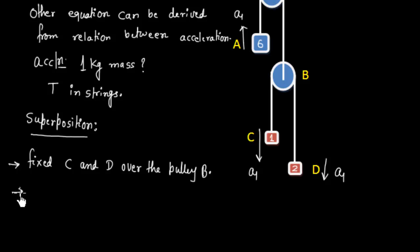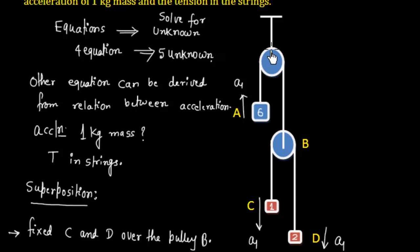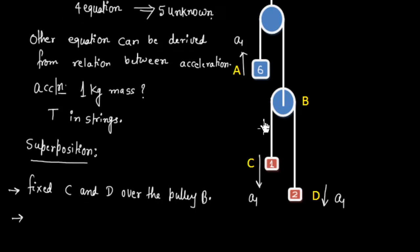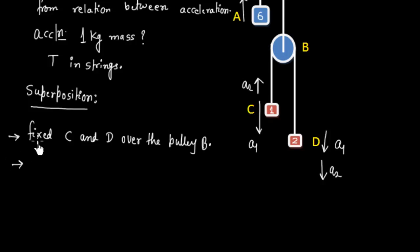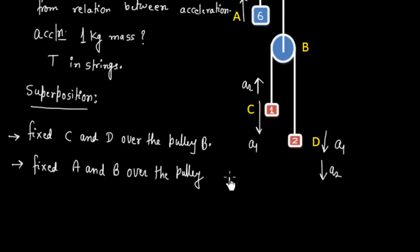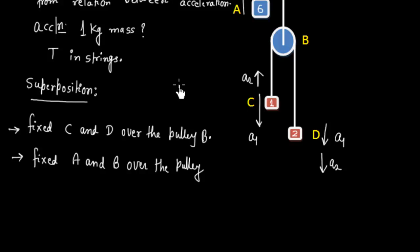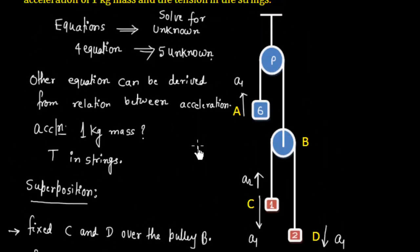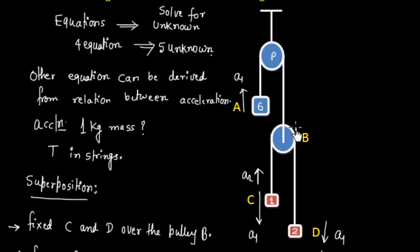In the first case we have fixed C and D over the pulley B. In the second case, let us fix A and B — now this rope is fixed and not moving. Only C and D are free to move. Let us say C is going up with acceleration A2, so D is coming down with acceleration A2. In this second situation, A and B are fixed and the rope over the pulley is glued, so only the C–D system moves.